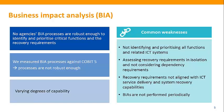A business impact analysis (BIA) identifies what business functions are critical to the daily operations of an agency and the required resources it needs to operate, e.g. systems. The BIA identifies how much time business functions have to return to full or acceptable degraded levels of operation following a disruption. We measured agencies' BIA processes against COBIT 5, a globally accepted process assessment model, and found their processes are not robust enough to identify and prioritise their critical business functions and the recovery requirements for related systems. Common weaknesses include not identifying and prioritising all business functions and related ICT systems, assessing recovery requirements in isolation without considering system dependency requirements, not aligning systems recovery requirements with ICT service delivery and system recovery capabilities, and not performing BIAs periodically.